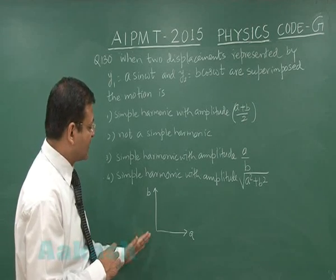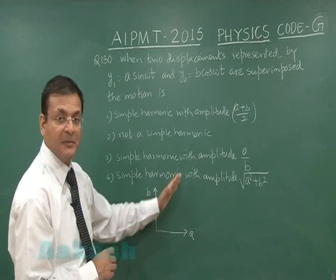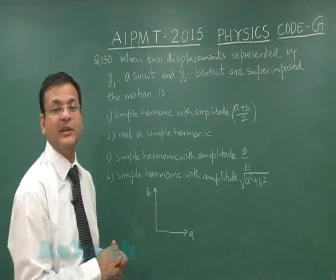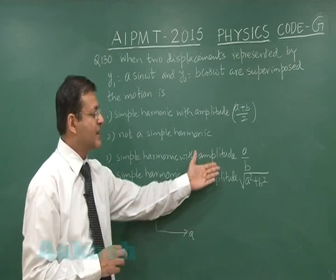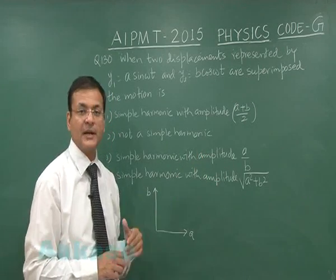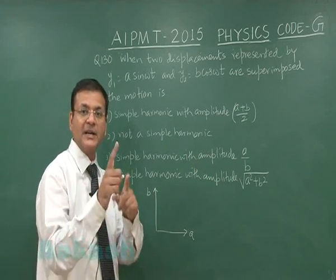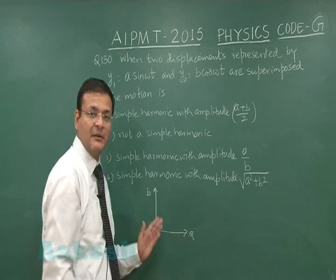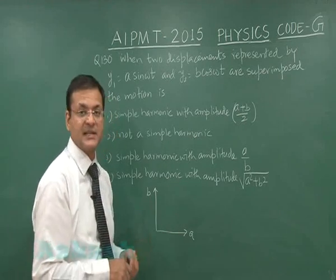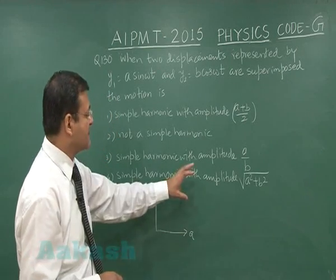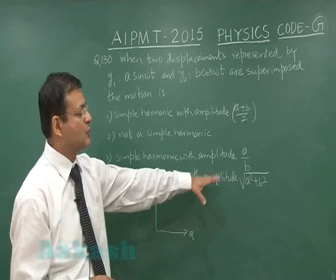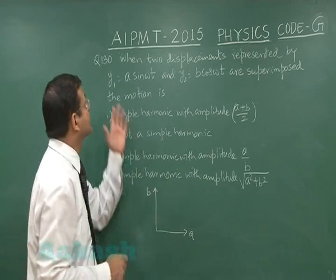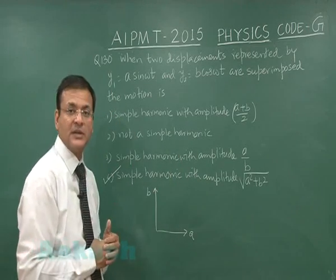You can also calculate the phase angle φ that the resultant makes with the x-axis, and write the final expression as √(a² + b²)·sin(ωt + φ). The question only demands the amplitude of the resulting simple harmonic motion, which is √(a² + b²). This is the appropriate answer for question 130.